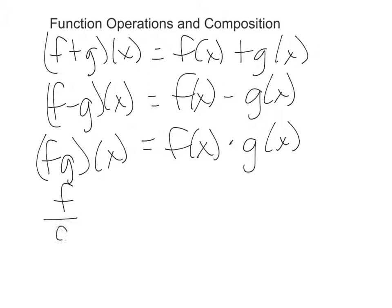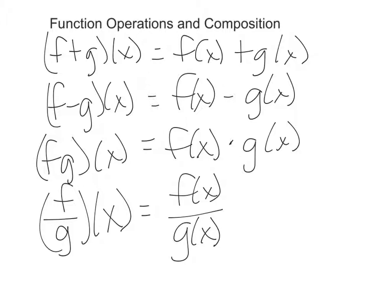If you have F over G of X, what operation is that? Division, last but certainly not least. Now anytime you have division, what's the deal with the denominator? Can't equal zero. Good. Remember, that's one of our big fat no-no's. So this works as long as G of X does not equal zero.